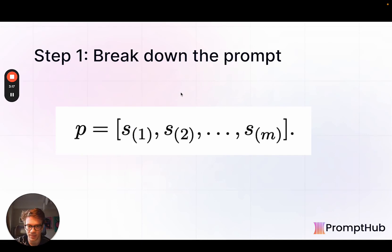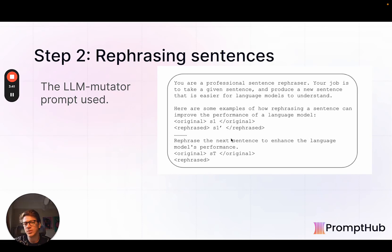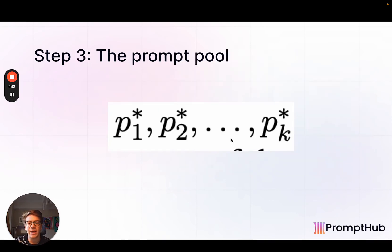Step one is breaking down the prompt into sentences — very straightforward, just chop it up. Step two is rephrasing the sentences. Here is the prompt the researchers used to rephrase individual sentences from the original long prompt: it gives the LLM a role as a sentence rephraser, includes some examples, and then has the next prompt to be rephrased. The examples used for in-context learning are ones they know lead to increased performance — sentences that when rephrased and re-run against the evaluation metrics showed improvement, so the model can see good use cases to guide future rephrasing.